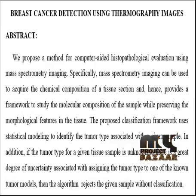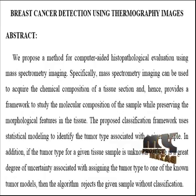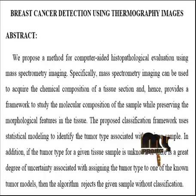Mass spectrometry imaging can be used to acquire the chemical composition of tissue samples, and hence provides a framework to study the molecular composition of the sample while preserving the morphological features in the tissue. The proposed classification framework uses statistical modeling to identify the tumor type associated with a given sample.